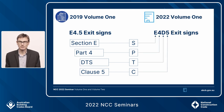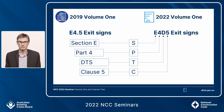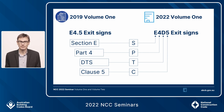This is how it translates to the new system. Moving from E4.5 in NCC 2019 to NCC 2022, we have E4D5 under the Section Part Type Clause system. Exit signs translates quite tightly — just take the dot away and put in the letter: D for deemed-to-satisfy, P for performance requirement, etc. There have been other changes for NCC 2022 that mean it doesn't always translate this tightly.